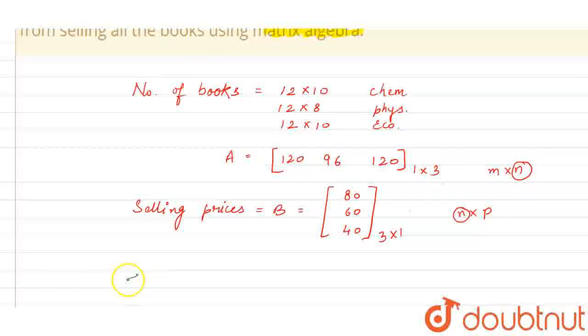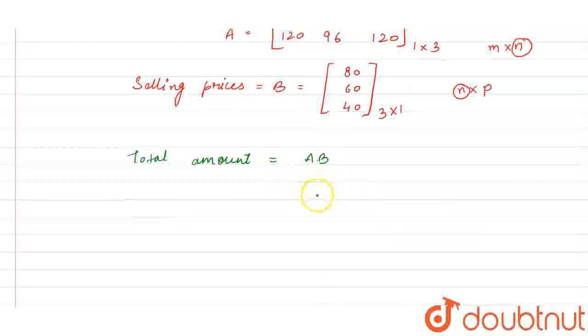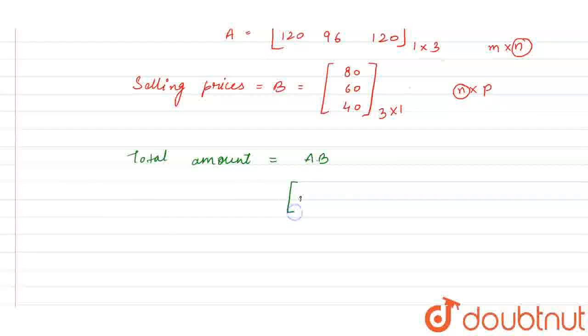For total amount, what we need to do is A multiply by B. So here if we write it, what is our A matrix? 120, 96, again 120. And here it will be 80, 60, and 40.